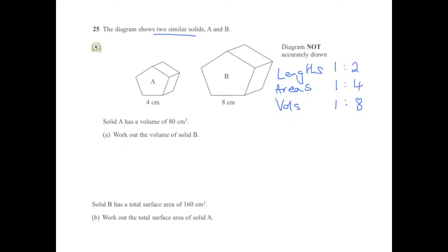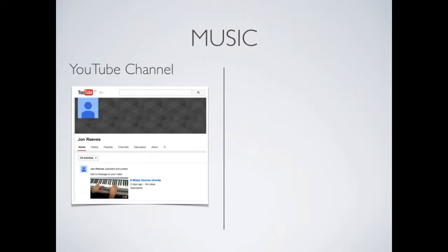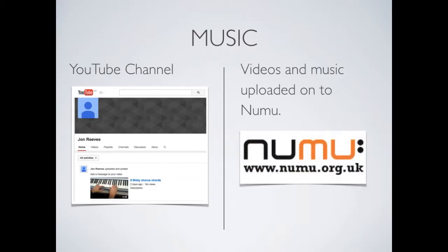So what I do is I write down volume equals 80 times 8 and that's 640. In music, John made podcast lessons which he uploaded onto YouTube and John also put music lessons on the Numu site. These were trialed with GCSE classes.